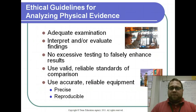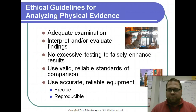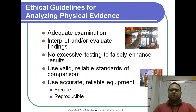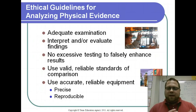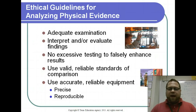Ethical guidelines for analyzing physical evidence: you need to actually examine it adequately — you're not just brushing past it. Interpret and evaluate the findings. Do not excessively test an item to try to enhance the results — for example, if you test a DNA sample and it comes back one way, you wouldn't keep testing it over and over because you think it points to someone else. Use valid and reliable standards of comparison, and use accurate, reliable equipment.